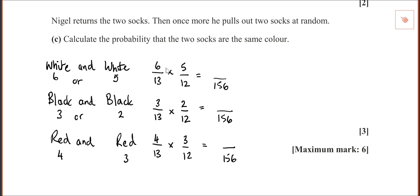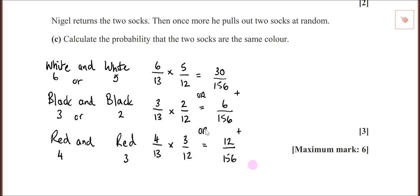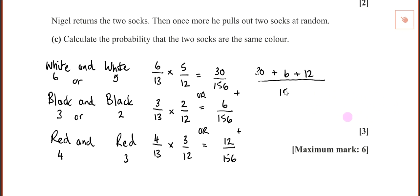Six times five is thirty, three times two is six, four times three is twelve. The word 'or' means we add them together. So we end up with thirty plus six plus twelve, all over one hundred and fifty-six, which is forty-eight over one hundred and fifty-six.